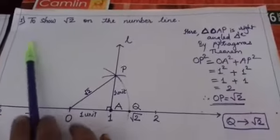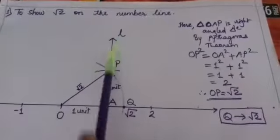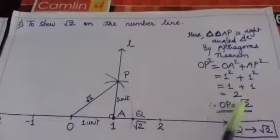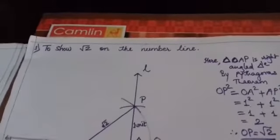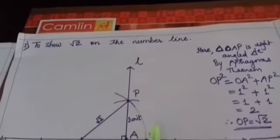Children, we already started the first question and completed it on the board in the last video. Representation of √2 on the number line - we completed it earlier. Now, come towards the next question.